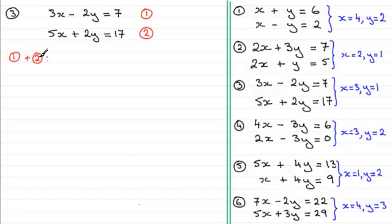So if we add our equations we've got 3x plus 5x giving us 8x. So for the x terms we get 8x.